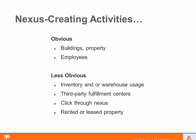Nexus — the physical presence — ties to which states you're required to collect and remit in. There are obvious triggers: buildings, property, employees. But there are other things happening now: click-through nexus, affiliate nexus, where states view link sellers directing traffic to your site as a nexus-triggering event. 3PLs like Fulfillment by Amazon, renting property anywhere in the U.S., and inventory and warehouse usage can all trigger nexus. It's important to understand your model and the implications in specific states, as it varies state to state.